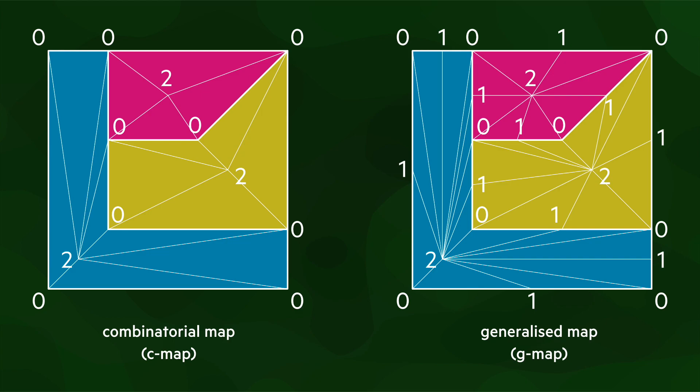So we can say that a generalized map dart is a unique vertex edge-face combination, whereas a combinatorial map dart is a unique edge-face combination.